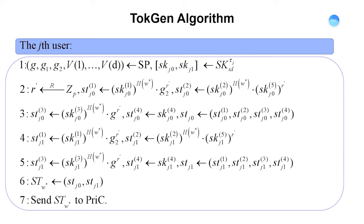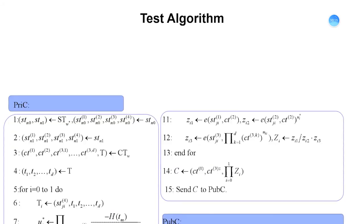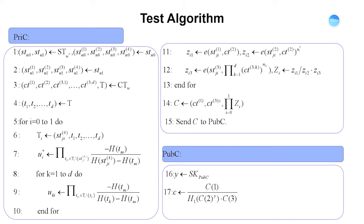This algorithm describes how a user generates a valid search token for a certain keyword w*. It takes the identity secret key and the keyword as inputs and computes the token st_{w*}. Once the token is generated, it is sent to the private cloud. After receiving the token, the private cloud tests whether the user is authorized to the keyword using the Lagrange interpolation formula. If the user is authorized, their tag will not belong to tag set T, and therefore the coefficients u_i* can be computed successfully. Finally, the private cloud uses its private key to compute the verified ciphertext C and sends it to the public cloud. The public cloud uses its secret key to test if the ciphertext contains the same keyword as the search token by checking if C equals 1.